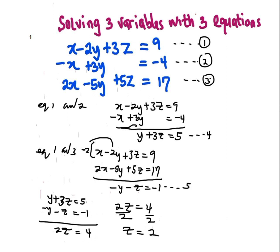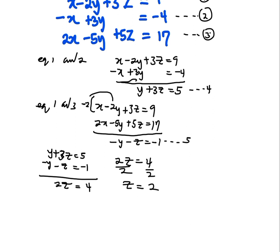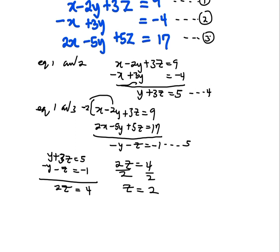So, I've gotten the first unknown. Now, let's proceed by getting the remaining unknowns. Plug in z equals 2 in either equation 4 or equation 5. We can use equation 4.